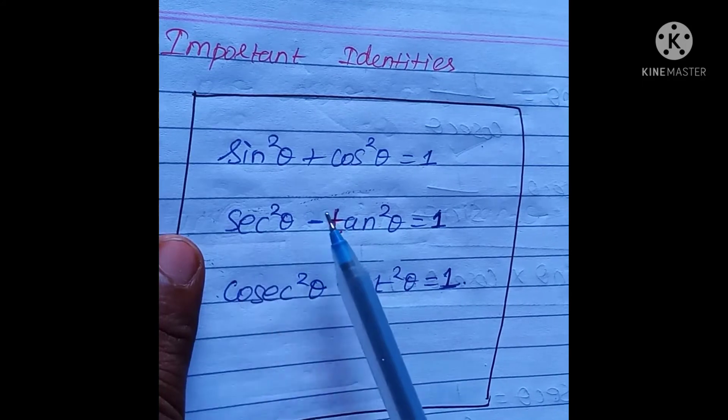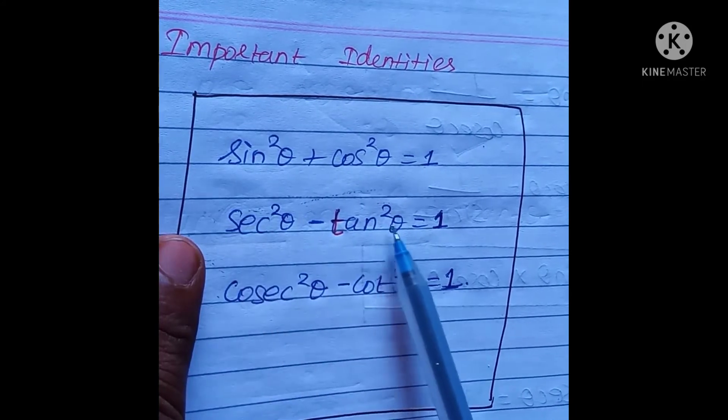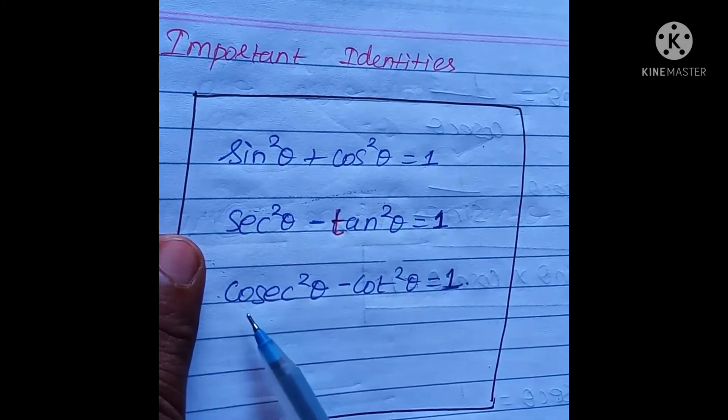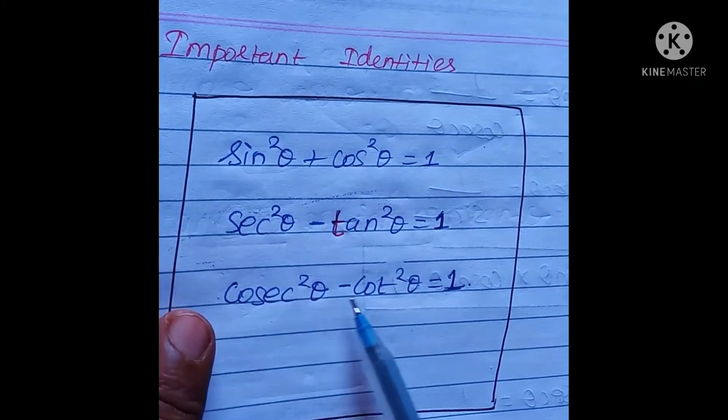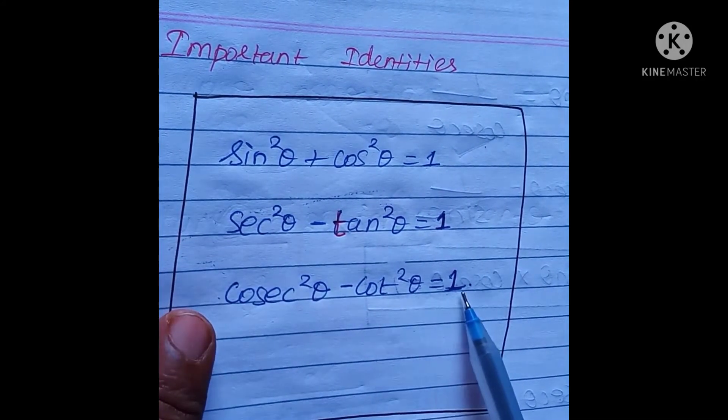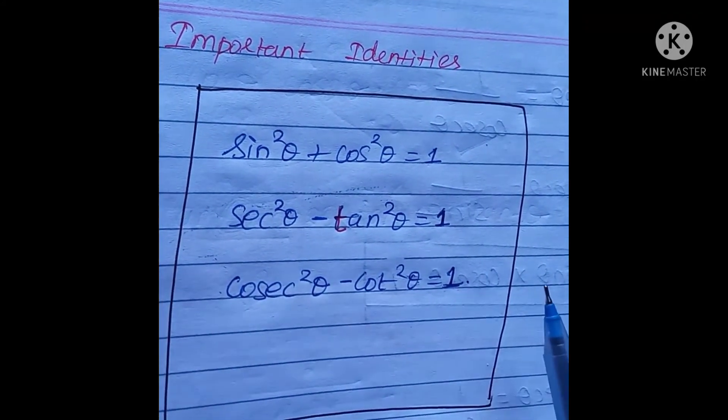So sec²θ − tan²θ = 1, and cosec²θ − cot²θ = 1.